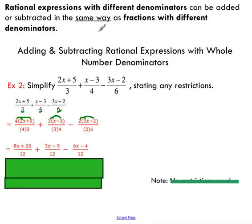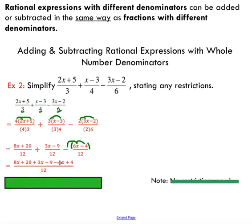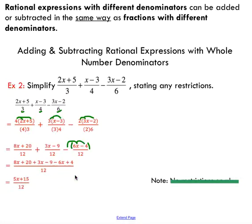Now we have a set of common denominators, so we add straight across. But don't forget to put the subtracted binomial in brackets, because that negative affects the sign of each term. Collecting like terms — the x terms and the constant terms — we end up with 5x plus 15 over 12. Interestingly, we have no restrictions on x here because there's no x in the denominator, so this rational expression can't blow up in our face.